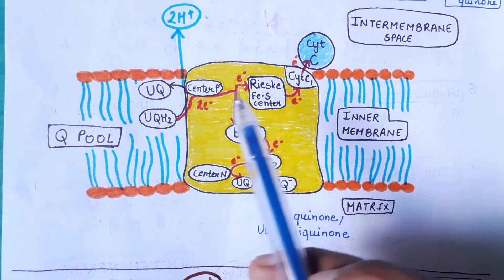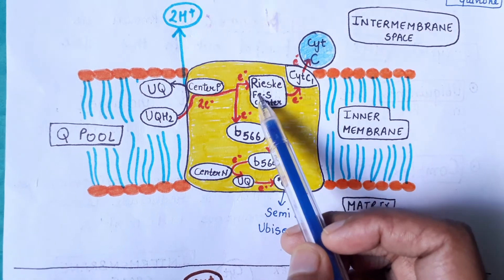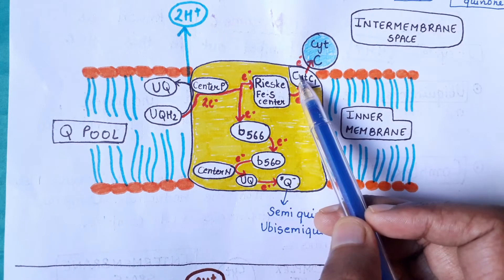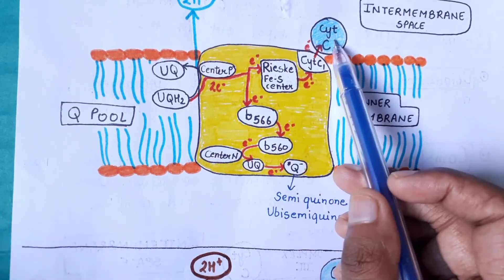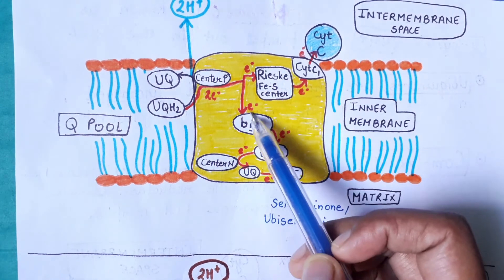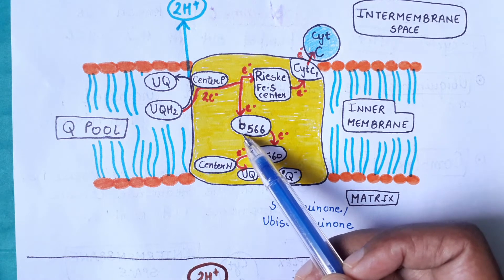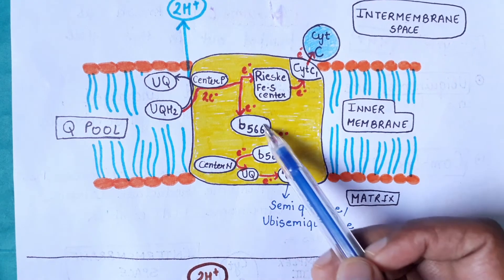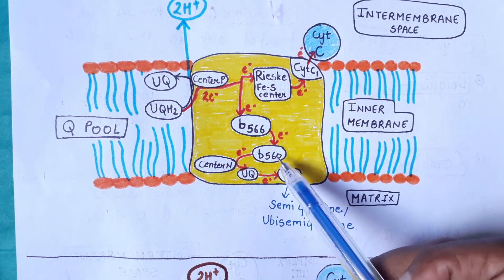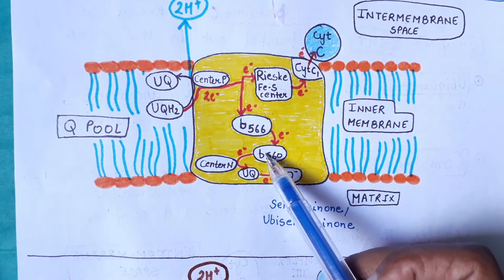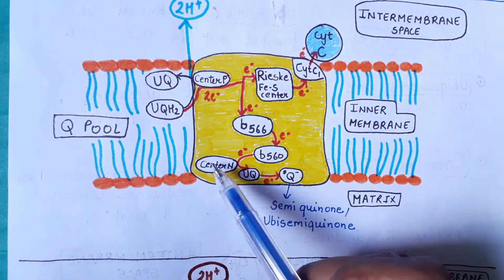The two electrons released from ubiquinol follow different paths. Out of the two electrons, one electron is accepted by the Rieske iron-sulfur center, then moves through cytochrome C1, and is ultimately transferred to cytochrome C. The second electron is accepted by heme group B566 of cytochrome B, then moves to B560, and is ultimately accepted by a ubiquinone molecule near center N.